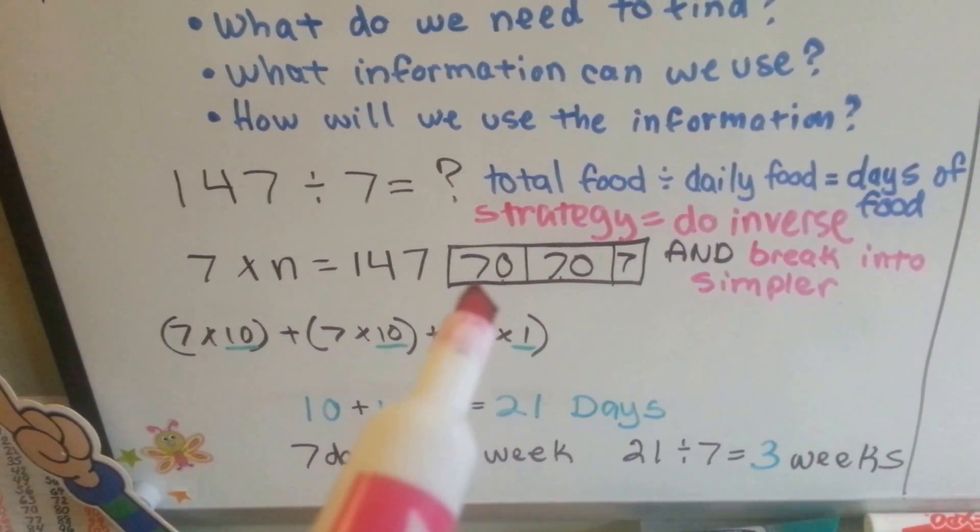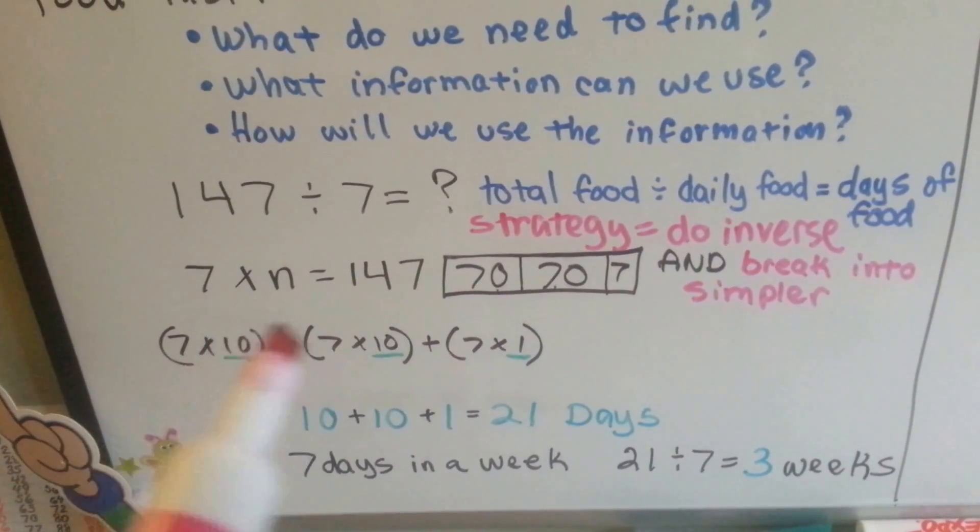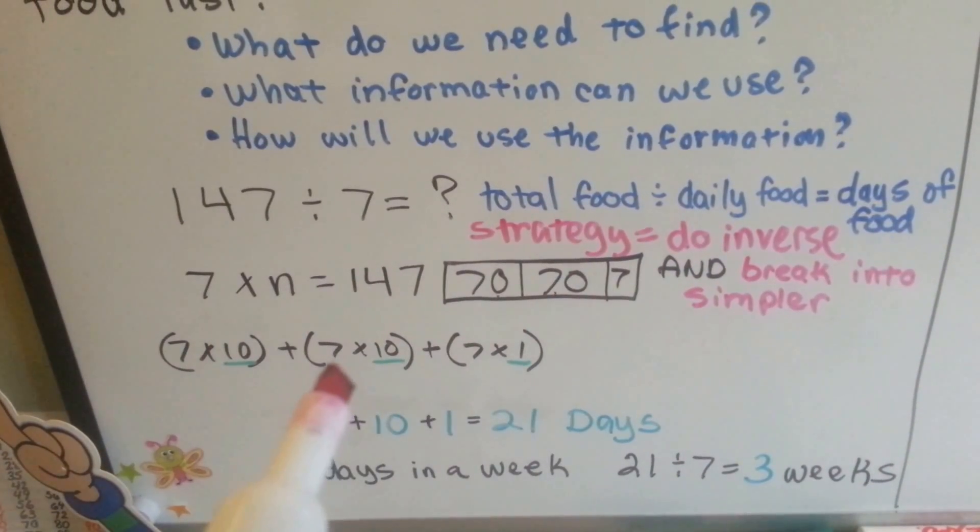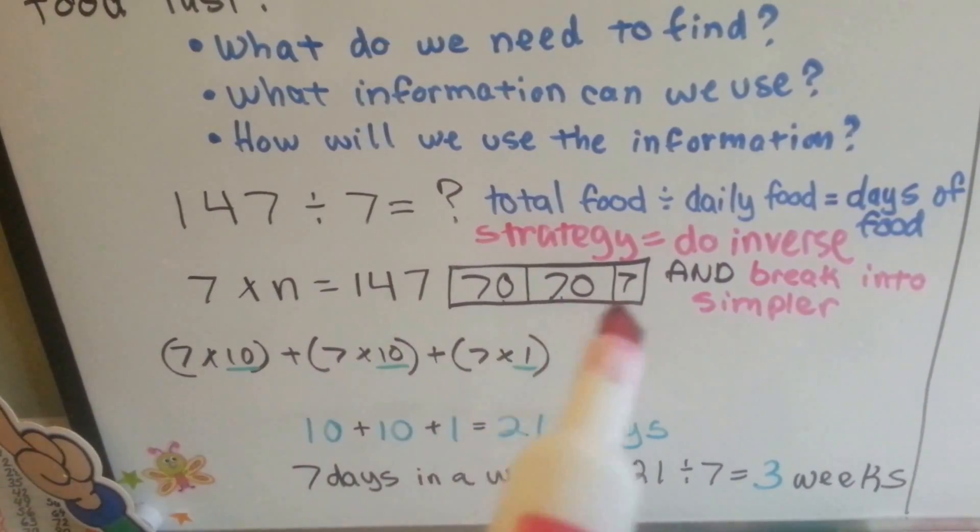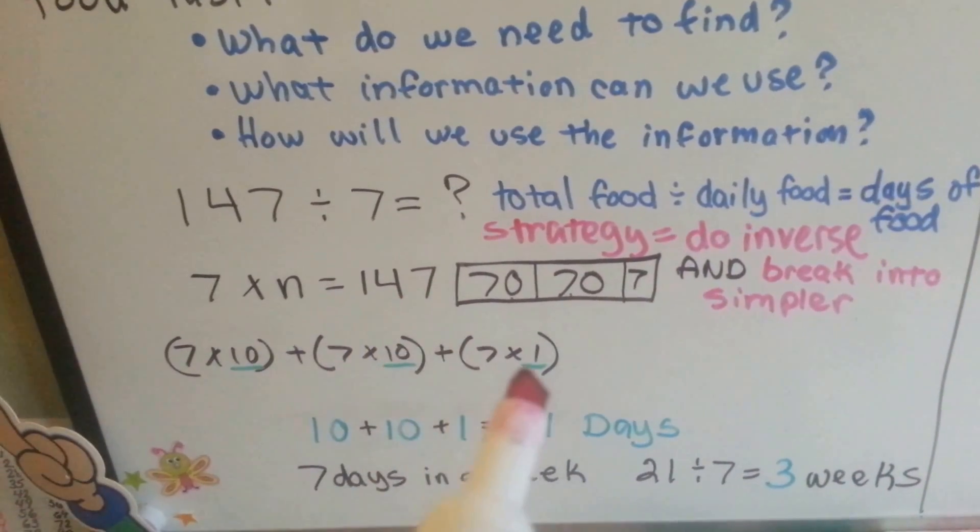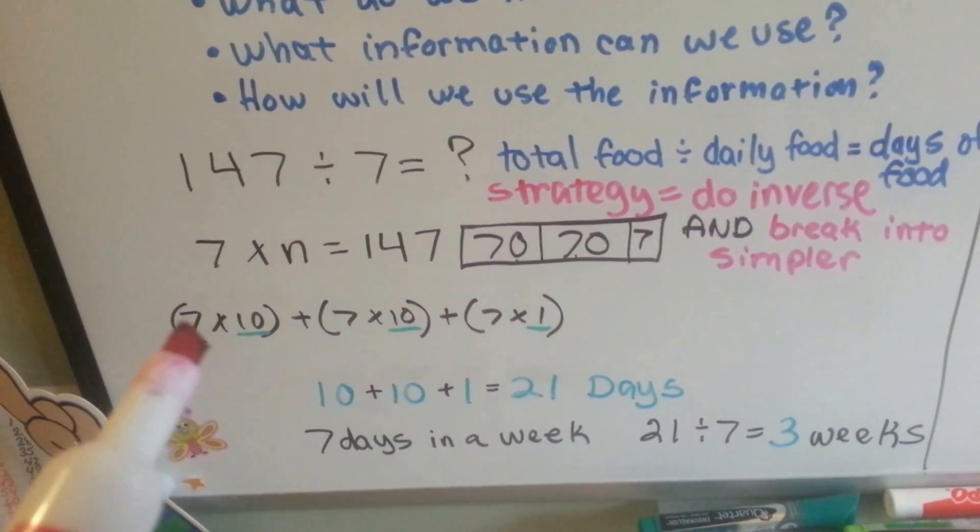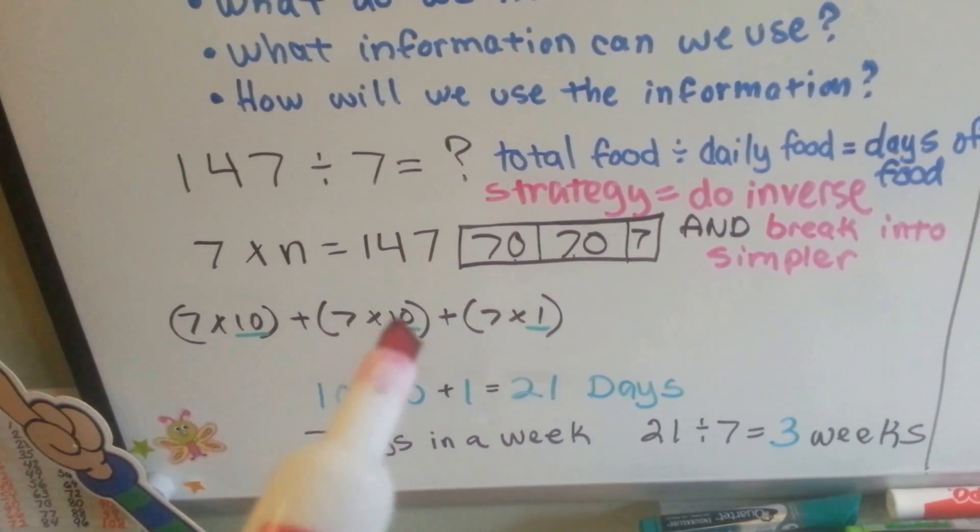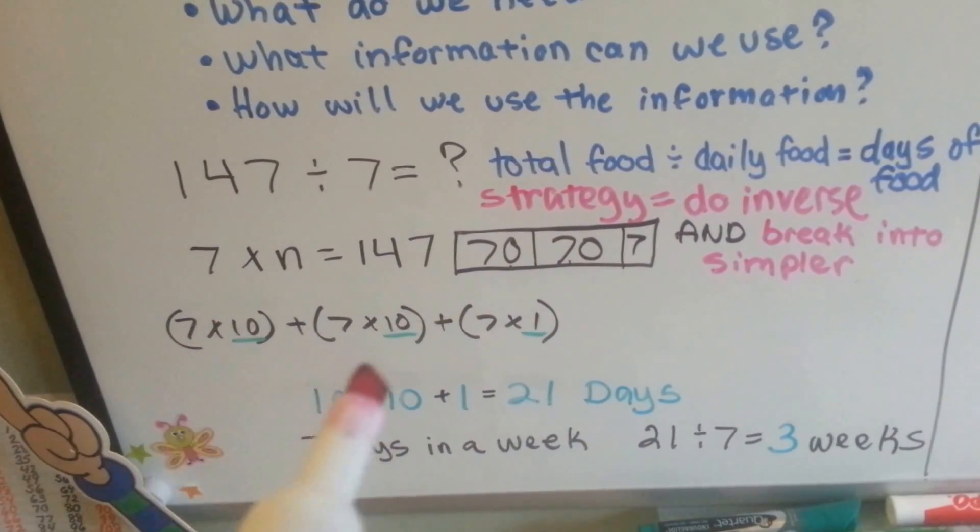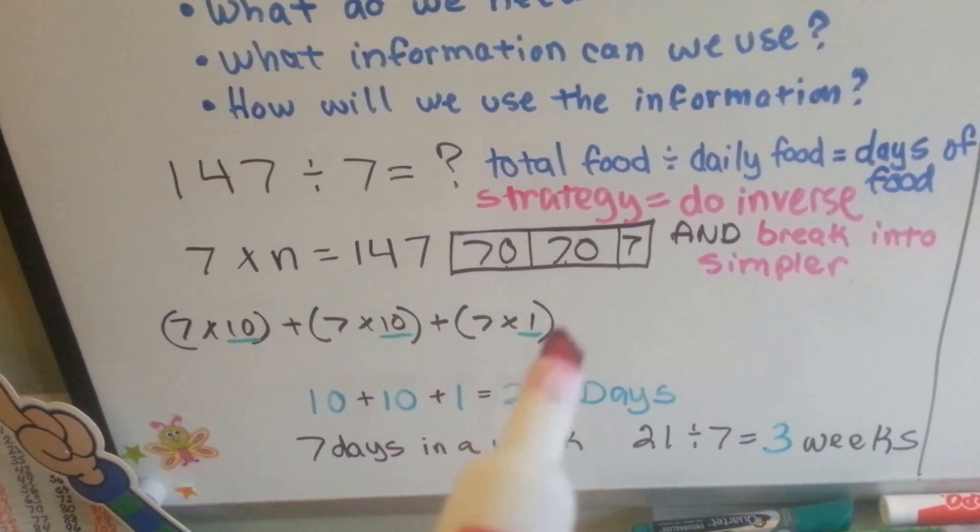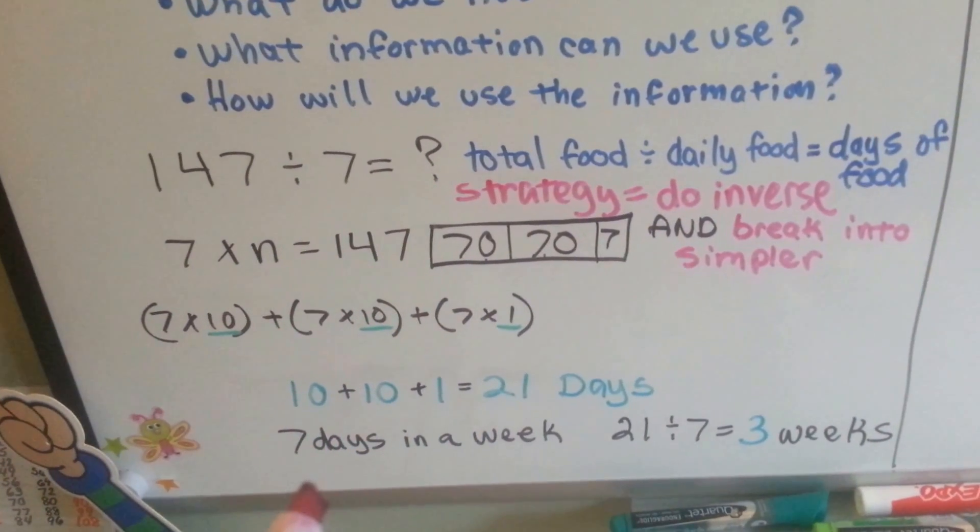So I know 7 times 10 is 70, so I did that and I did it again. That made 140, and then I had a 7 for the little 7 left over. So now I've got 7 times 10 plus 7 times 10 plus 7 times 1. I pulled the addends out, 10 and 10 and 1, and got 21 days.